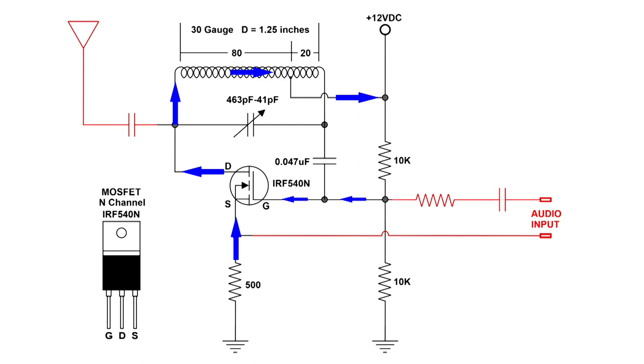And when it conducts, it's going through 80 turns of that coil to the positive side of the power supply. And it's making a magnetic field, and it's inducing a current in that 20 turns.